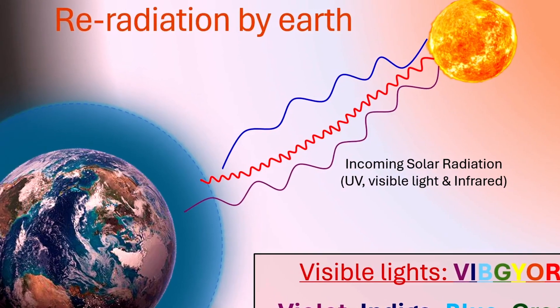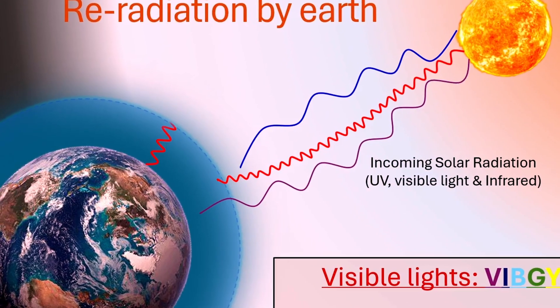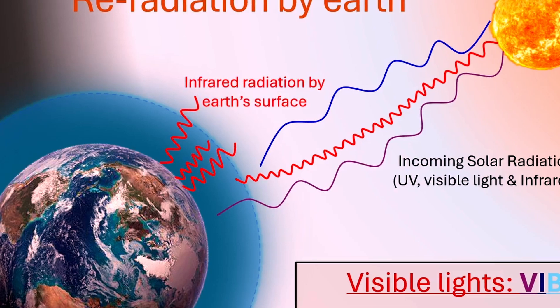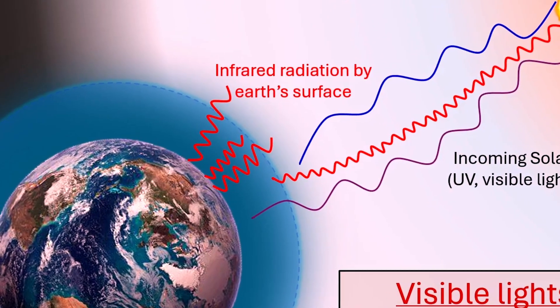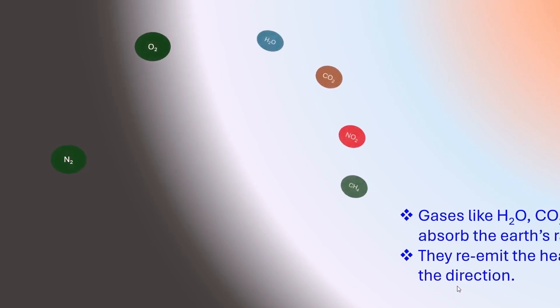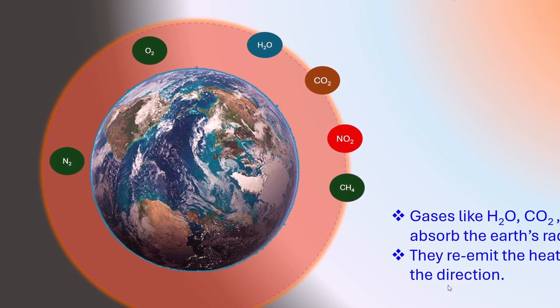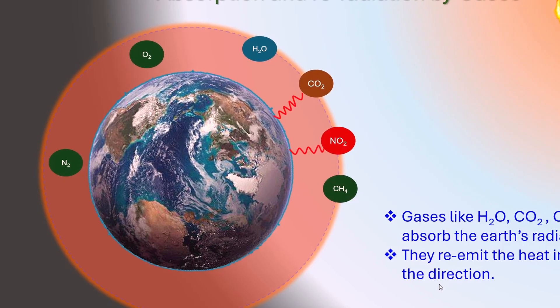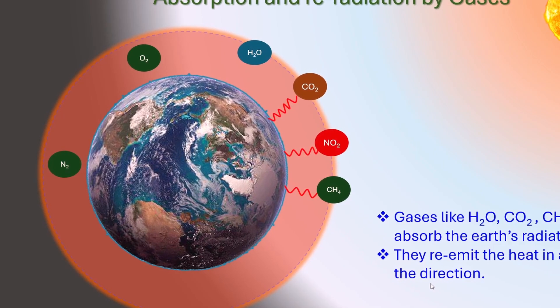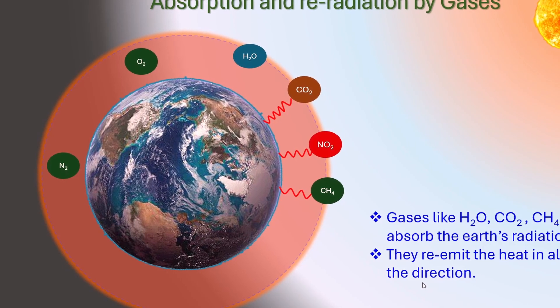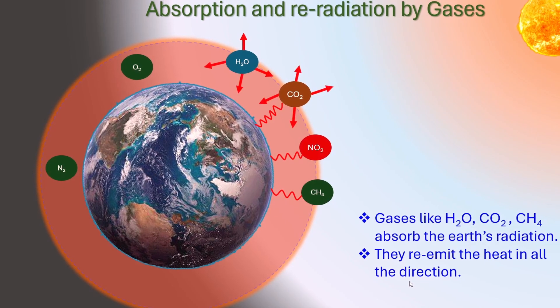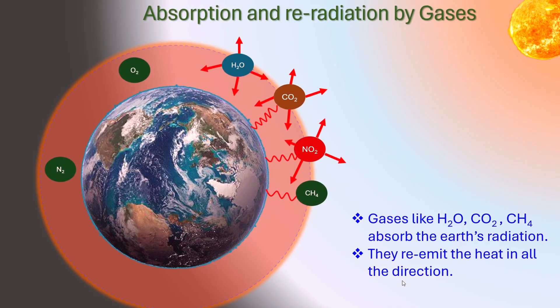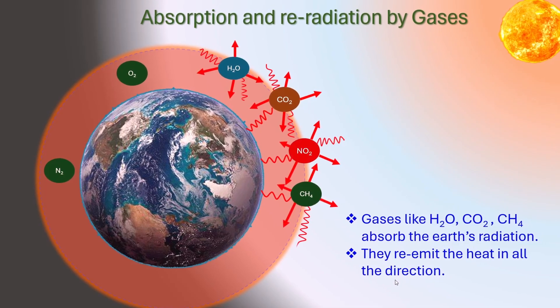The earth and its atmosphere release a portion of the absorbed energy back into space in the form of infrared radiation, which is actually a form of heat. Beyond oxygen and nitrogen, the atmosphere encompasses a variety of gases. Atmospheric gases like water vapor, carbon dioxide, and methane play a role in absorbing the earth's infrared radiation. These radiations are re-emitted in all directions and some of these radiations come back to the earth again.